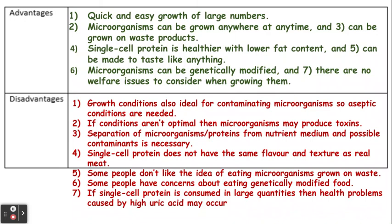However, disadvantages are that we do need aseptic conditions, which can be difficult and tricky to maintain and set up. If we don't have those optimal aseptic conditions, microorganisms might produce toxins, which is not ideal for food production. Also, people don't like the idea of eating microorganisms grown on waste, and some people have issues with eating genetically modified food.